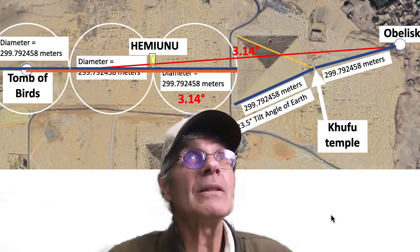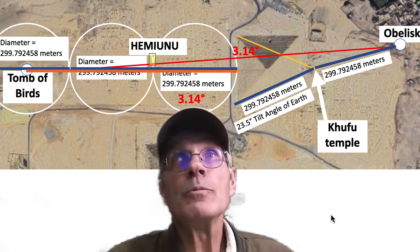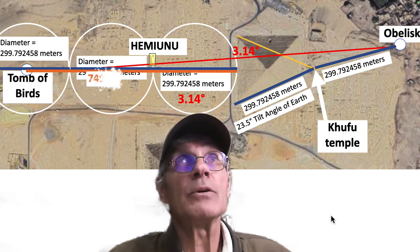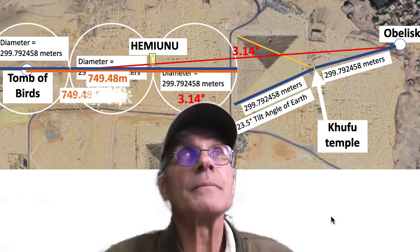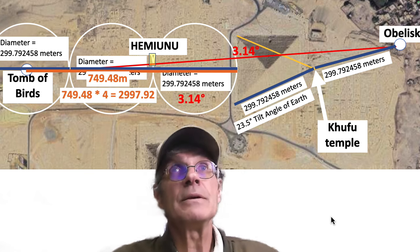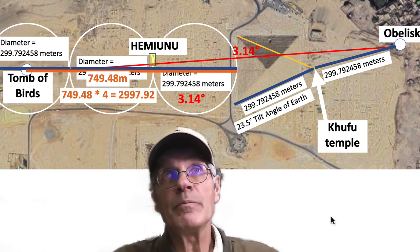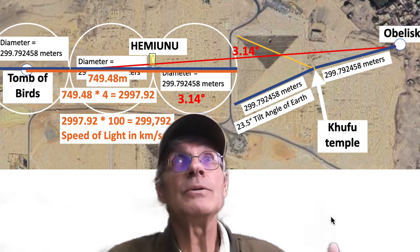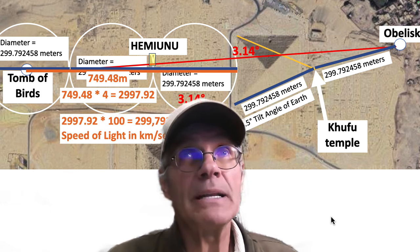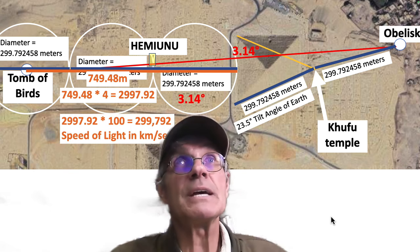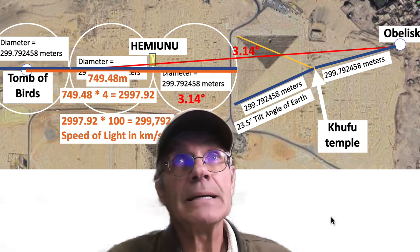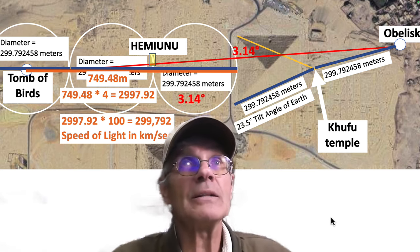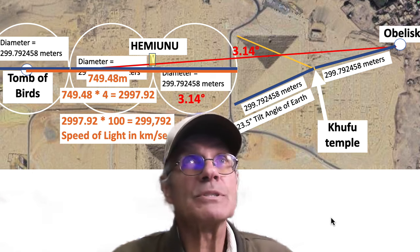That line right there, from the Tomb of the Birds to the west side of the Great Pyramid, is 749.48 meters. And if you multiply that by four, you basically get the speed of light in kilometers per second — times four and then times 100, it's 299,792. That's the speed of light in kilometers per second.